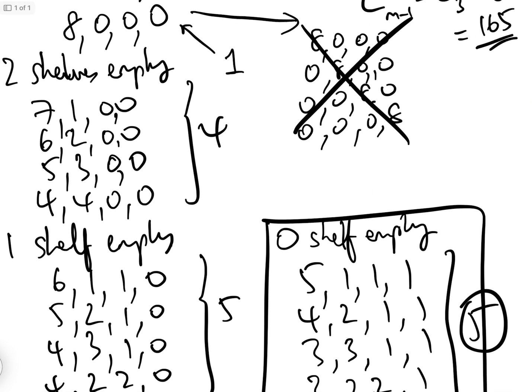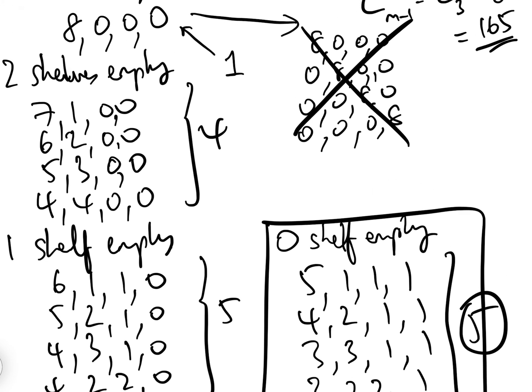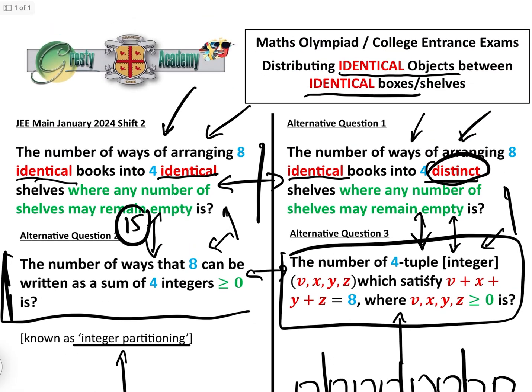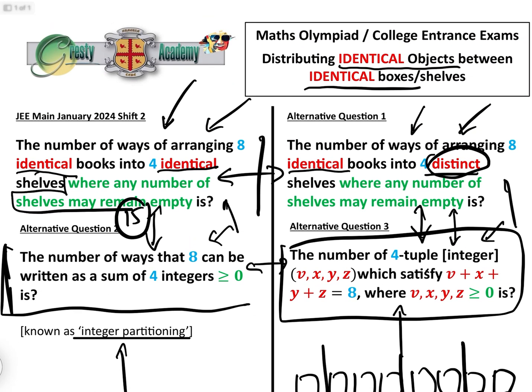If they said where a maximum of two shelves can be empty, well, then it would be 4, add 5, add 5. So listing the possibilities like this means that you can actually answer questions where this bit here is slightly different, just as easily, and by an identical method.